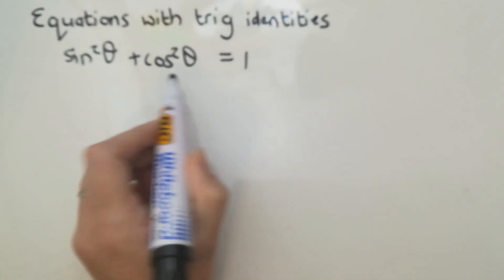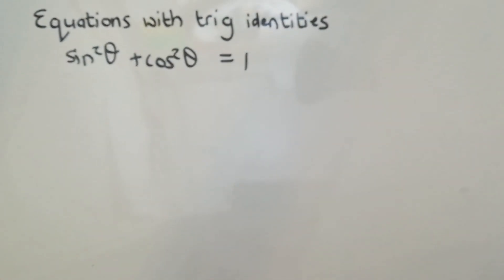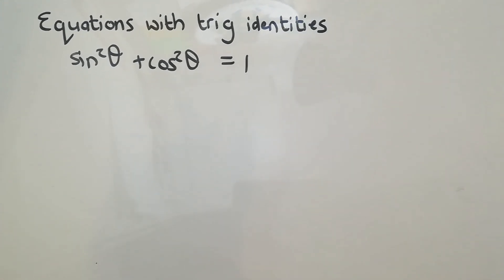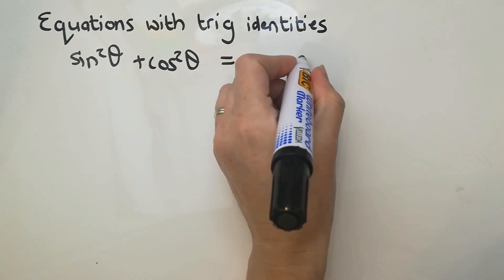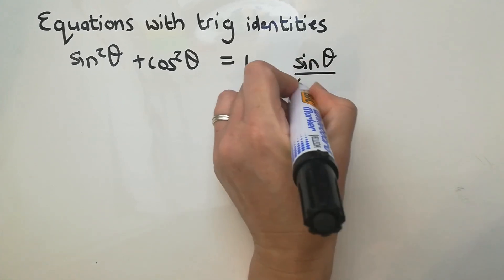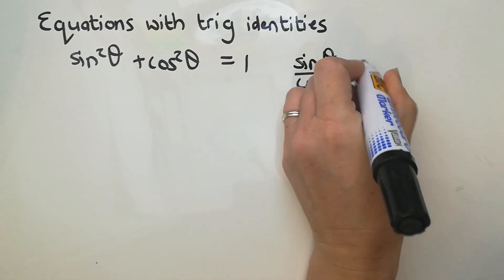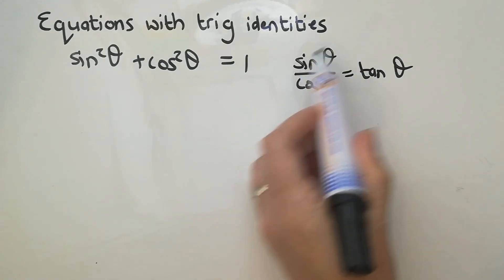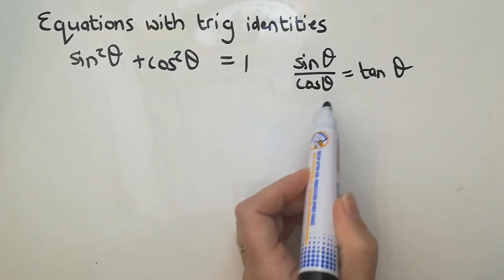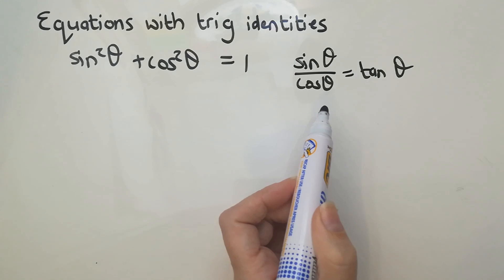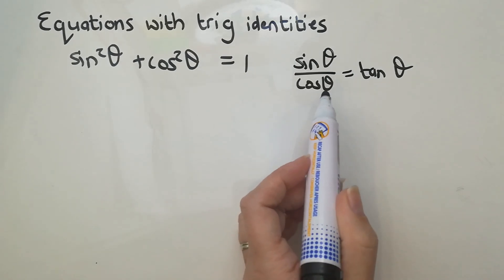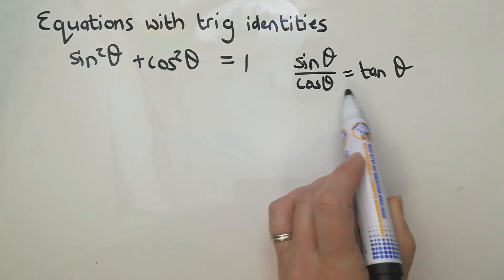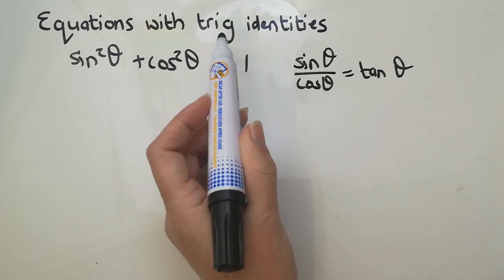It's tricky to figure out when you need to do the replacement and when not. The other one that you've done is sinθ/cosθ = tanθ. We've already used this when we have equations that have sine and cos in them that make tan, so that's useful.